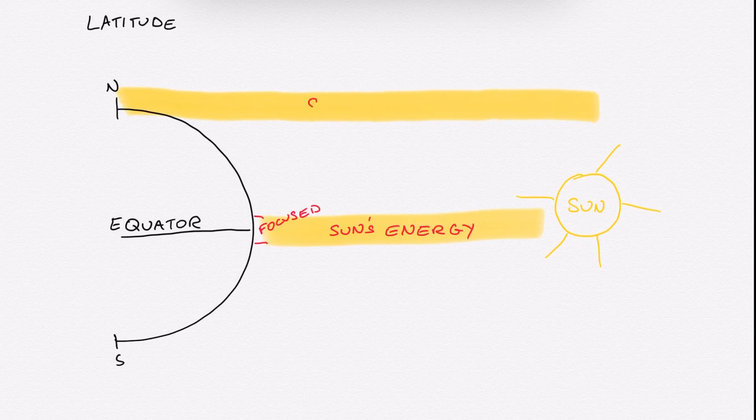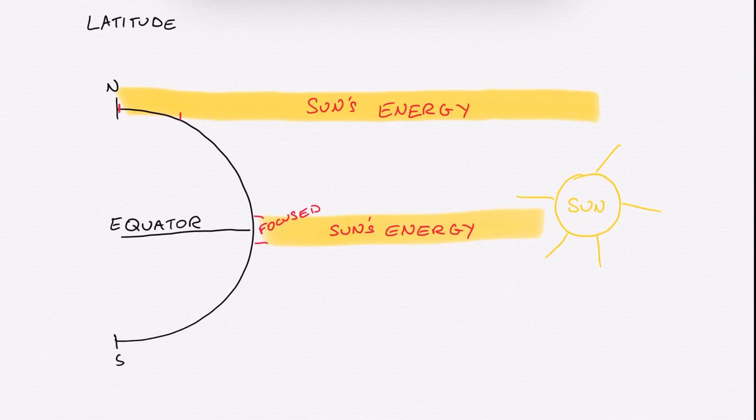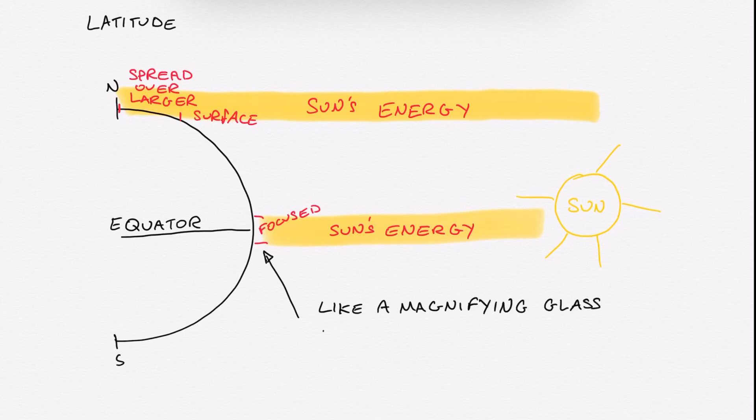because of the curvature of our Earth, the sun's energy and the sun's rays that hit the polar regions, as you can see from the same thickness of energy, is spread over a much larger surface area. Because of this, near the equator is like a magnifying glass. It heats that area much more. And near the poles is more dispersed, therefore it is much cooler.